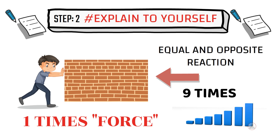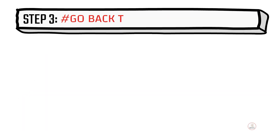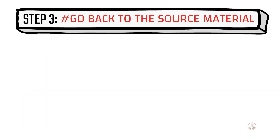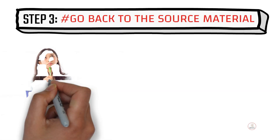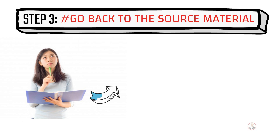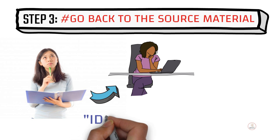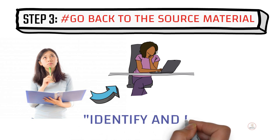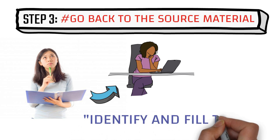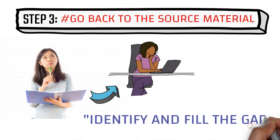Step 3: Go back to the source material. When you are explaining and you get stuck, go back and read that topic again. Then you can identify the gap and see it properly and clearly.